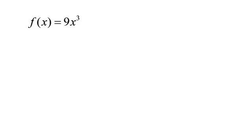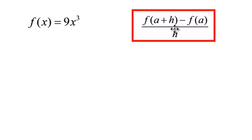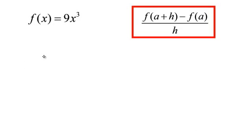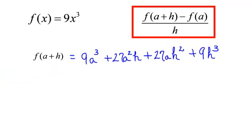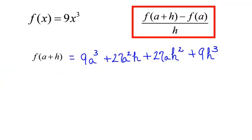So I have all my pieces to help me find the difference quotient. Remember the formula: f at a plus h minus f at a, all of that divided by h. And my function for this problem is f of x equal to 9x to the third. After a lot of work, we found that f at a plus h was that polynomial, and we found that f at a was simply 9a to the third. So I need to plug this information in to my formula.